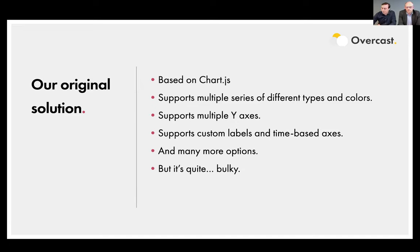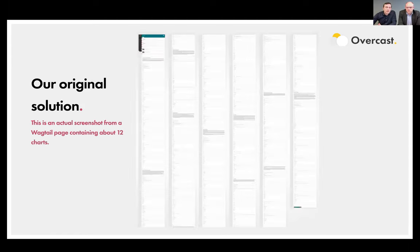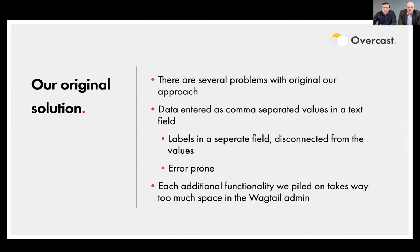As we continued creating different types of charts, we added more options and chart types and configuration — like multiple series, different types and colors, multiple y-axes, custom labels, different types of axes such as time-based and logarithmic, et cetera. This is all quite versatile, but all these options make it quite bulky. This is an actual screenshot from a Wagtail page of one of our clients — it's about 12 charts but it takes tens of thousands of pixels. It takes way too much space. Also, as the data is entered in plain text into chart fields with comma-separated values, labels are in other fields — they're disconnected from the values. So series and labels are not together, which makes the whole process of creating and updating charts error-prone and easy to make mistakes.